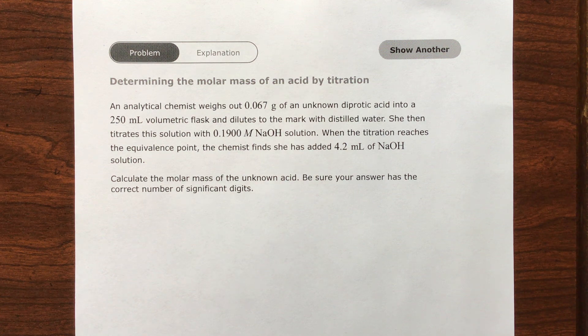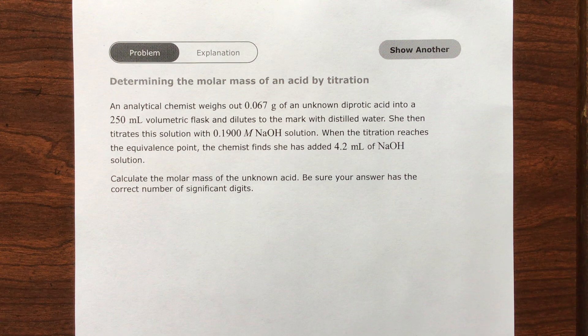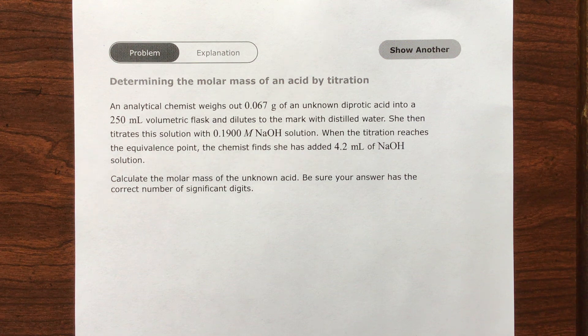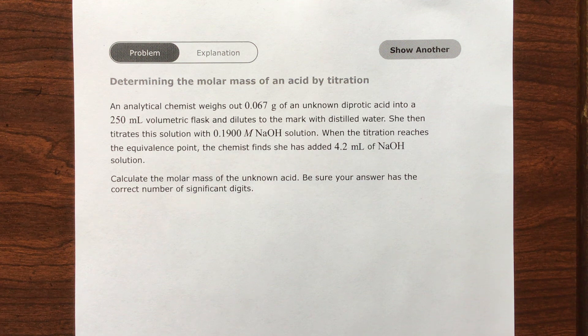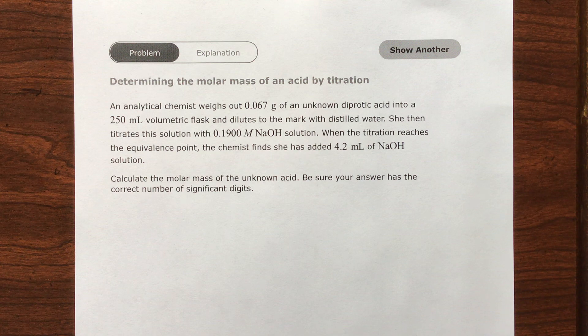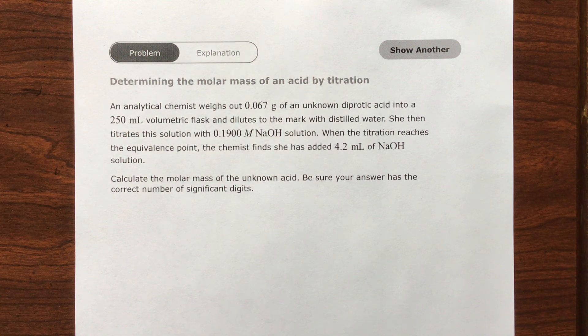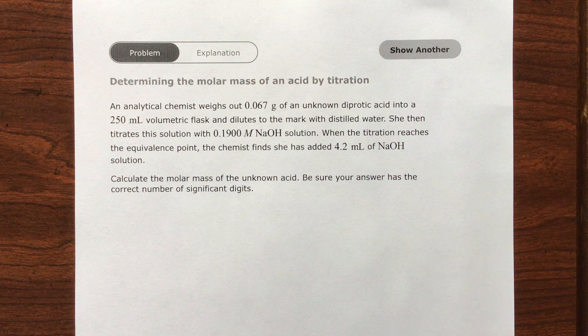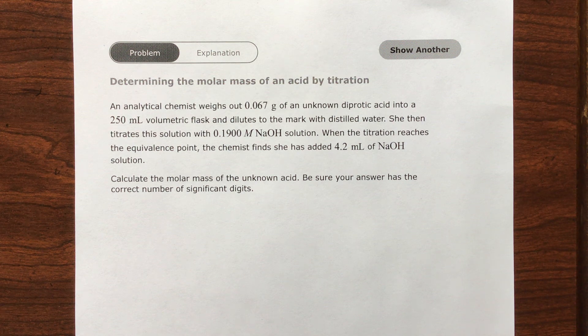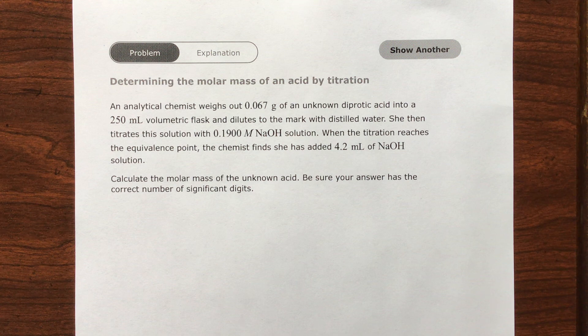Titration is when you take an acid which is donating a proton and you mix it with a base which is receiving that proton. Often you will neutralize that acid with the base by making water. A proton joins up with, say, a hydroxide and it turns into hydrogen hydroxide, which is H2O. I don't think you actually call water hydrogen hydroxide, but it's H and OH together, so it's H2O.